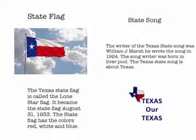The state song. The writer of the state song was William J. Marsh. He wrote the song in 1924. The songwriter was born in Liverpool. The Texas state song is about Texas.